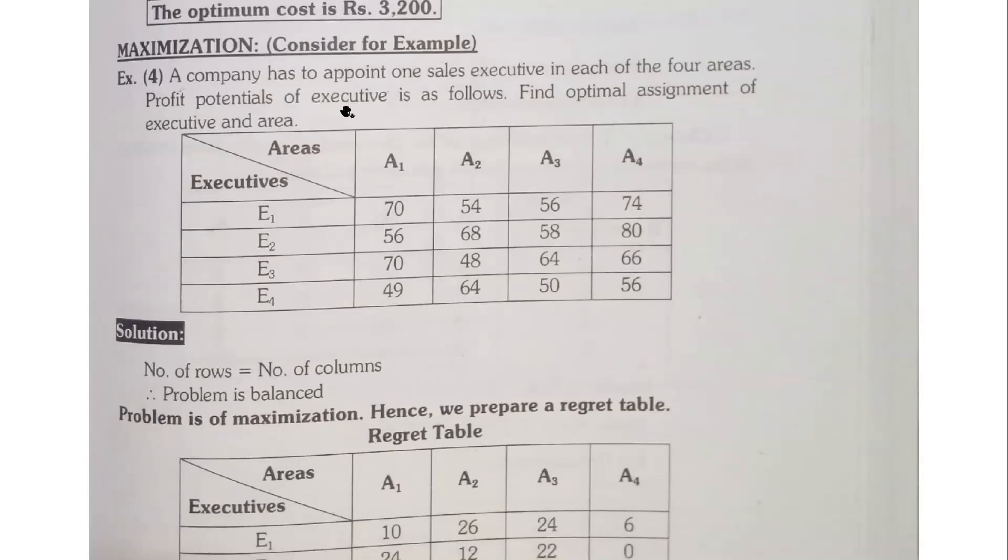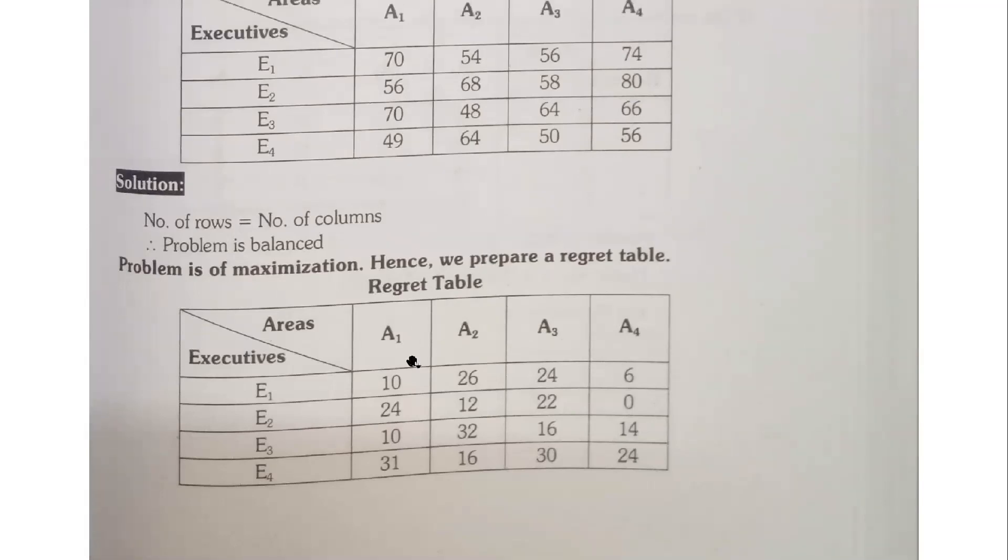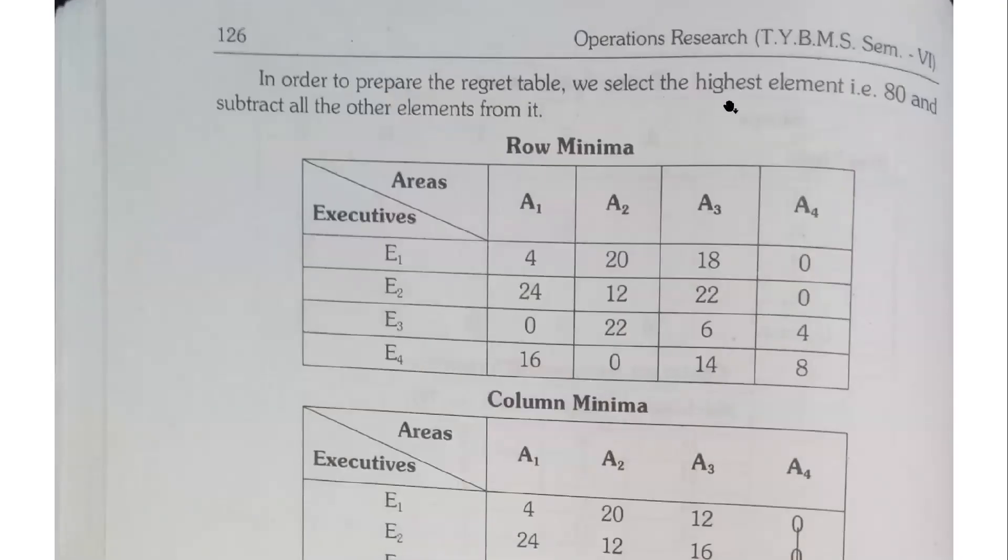A company has to appoint one sales executive in each of the four areas. Profit potential of executive is as follows, find optimal assignment. Areas are A1, A2, A3, A4, executives are E1, E2, E3, E4, balanced and no dummy rows or dummy columns. Number of rows equals number of columns, therefore balanced problem. Problem is of maximization, hence we prepare a regret table.